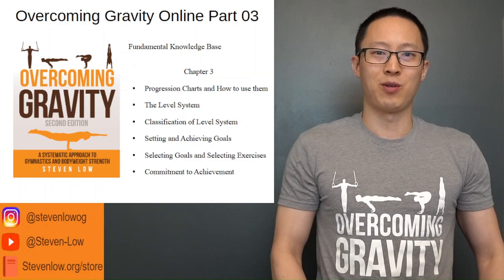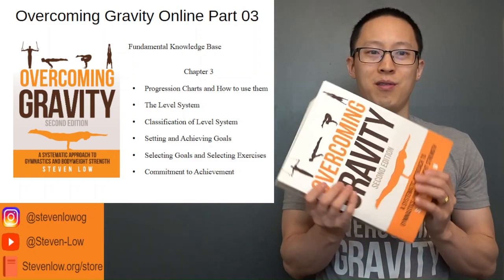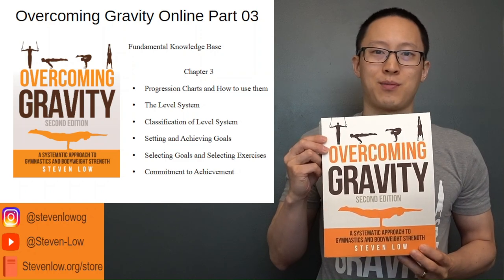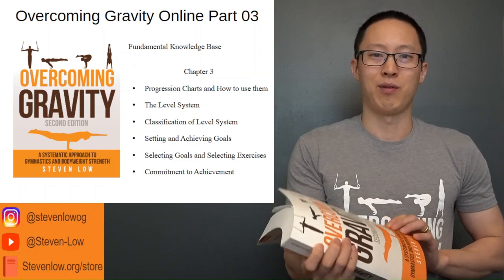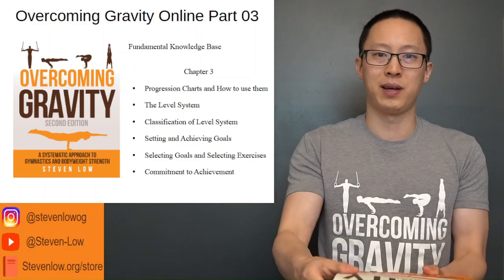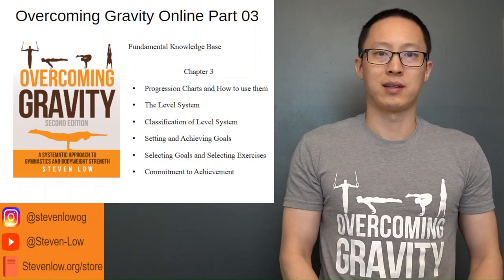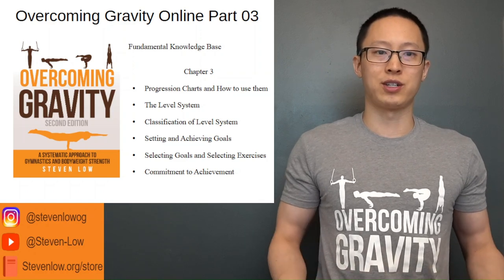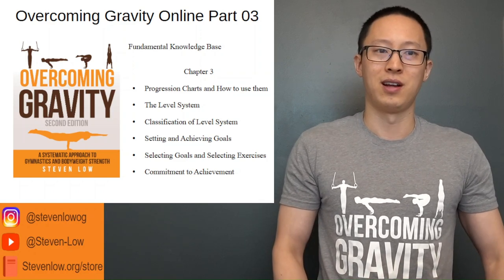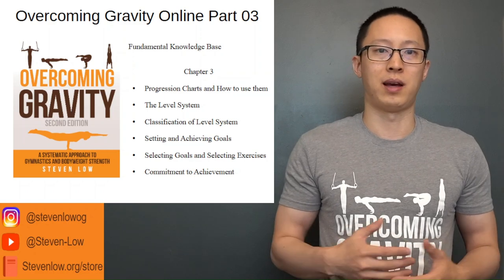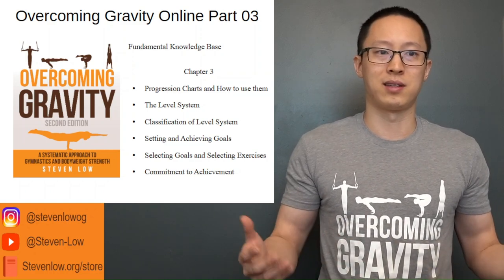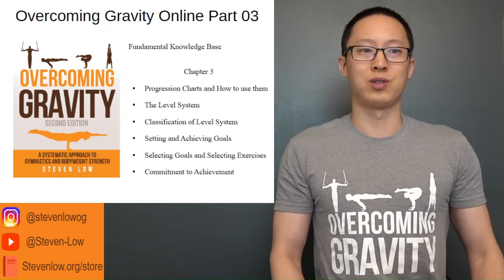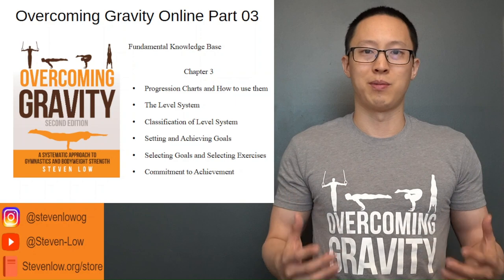Hey guys, my name is Stephen Lowe and I am the author of the book Overcoming Gravity: A Systematic Approach to Gymnastics and Bodyweight Strength. Today we'll be going over the fundamental knowledge base, part one, and in this specific video, chapter three, which goes over the progression charts, the level system, how to classify beginners, intermediates, advanced, and so on, and also setting and achieving goals and how to commit to achievement.